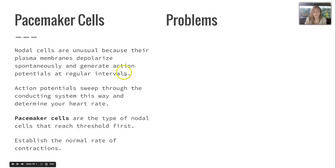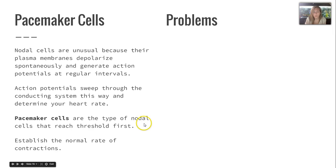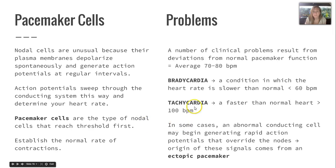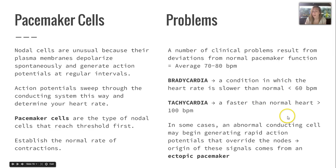Pacemaker cells are special nodal cells that depolarize spontaneously and generate action potentials at regular intervals, sweeping through the conducting system to determine heart rate. Problems arise when pacemaker function falls outside the average rate of 70 to 80 beats per minute. Bradycardia is a heart rate lower than 60 bpm, while tachycardia is greater than 100 bpm. Abnormal conducting cells may generate rapid action potentials that override the node's control — these come from an ectopic pacemaker.